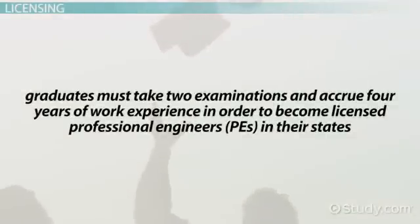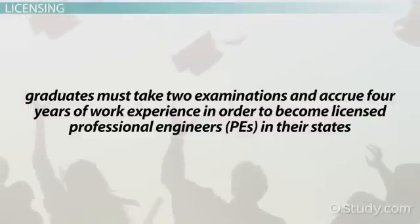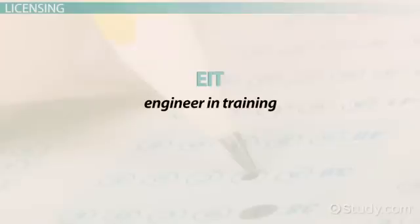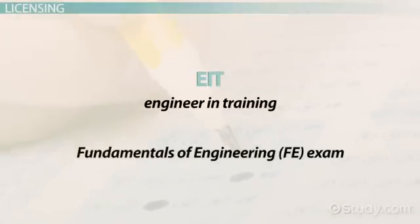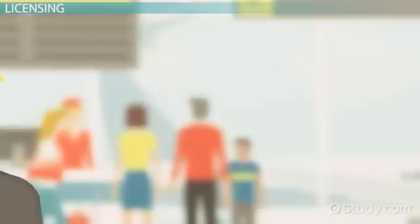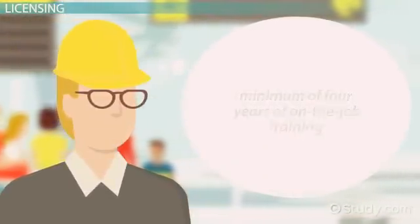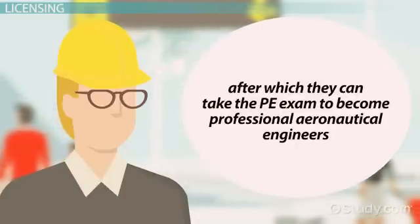Graduates must take two examinations and accrue four years of work experience to become licensed professional engineers in their state. They can use the title of EIT, or Engineer in Training, after passing the first Fundamentals of Engineering exam, which can be taken any time after graduation. EITs must also complete a minimum of four years of on-the-job training, after which they take the PE exam to become professional aeronautical engineers.